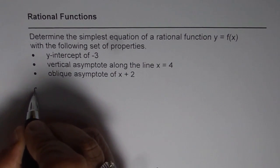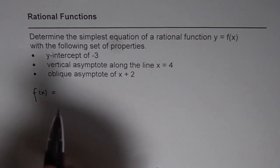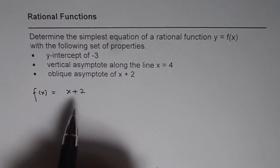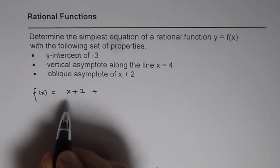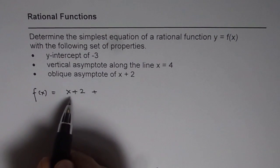We could start by writing a function as oblique asymptote means you could write that as a quotient when you divide by something. So x + 2 is a line which the function is approaching that becomes the oblique asymptote.